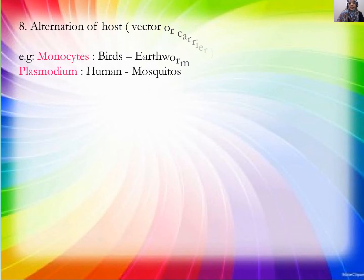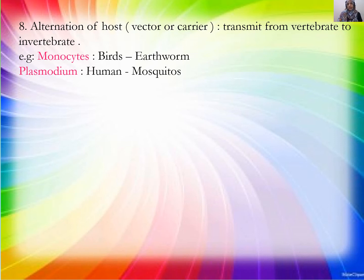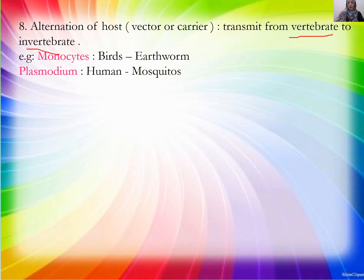They have a determination of host. Because they cannot move themselves, they use a vector and carrier for disease transmission. They mostly use two hosts — vertebrates and invertebrates — to complete their life cycle and transmit disease.